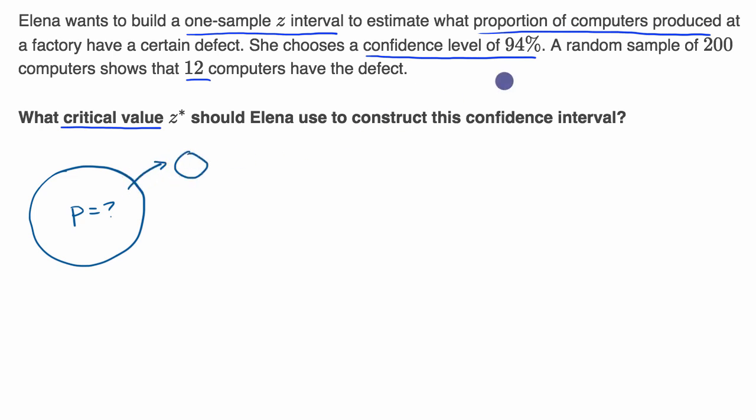We take a sample, in this case a random sample of 200 computers. We take a random sample and then we estimate this by calculating the sample proportion.